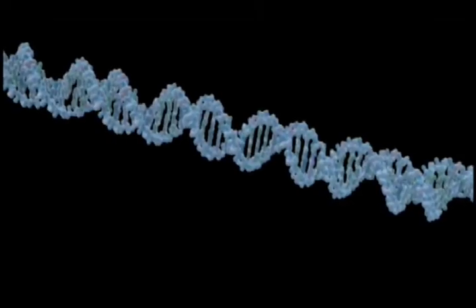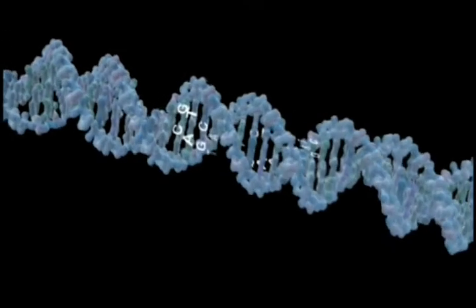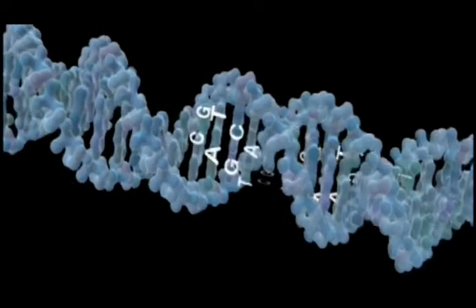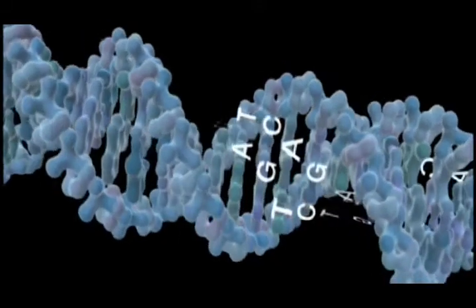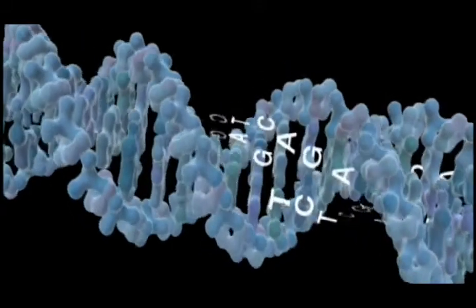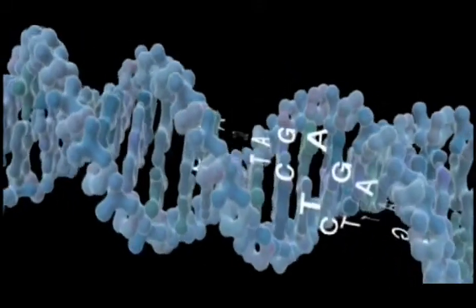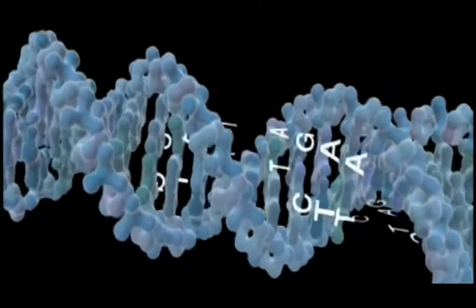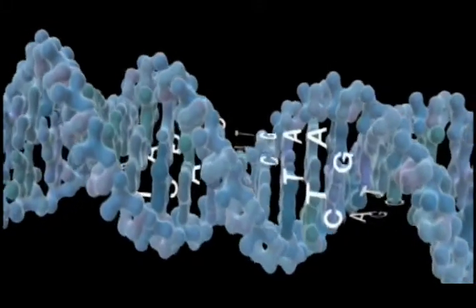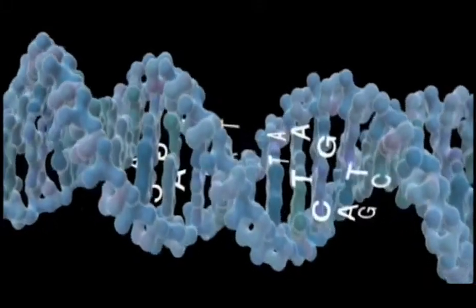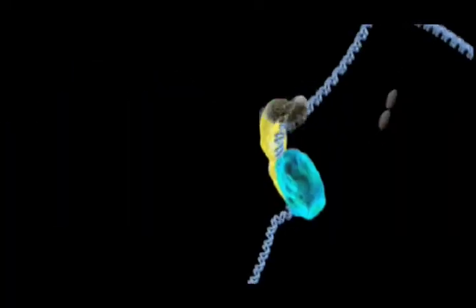In 1957, Francis Crick first proposed that chemicals called bases along the spine of the DNA molecule function as alphabetic characters in a written language or digital characters in a machine code. This animation shows how this digital information directs protein synthesis.